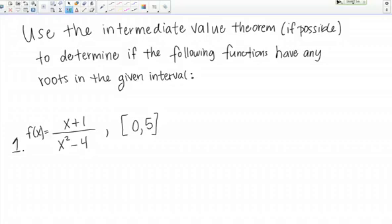Just from the very beginning, we need to decide if the Intermediate Value Theorem even applies. For the Intermediate Value Theorem to apply, the function must be continuous over the interval that we're looking at. Since this is a rational function, I'm automatically a little suspicious because I know that rational functions can be discontinuous wherever their denominator equals 0.